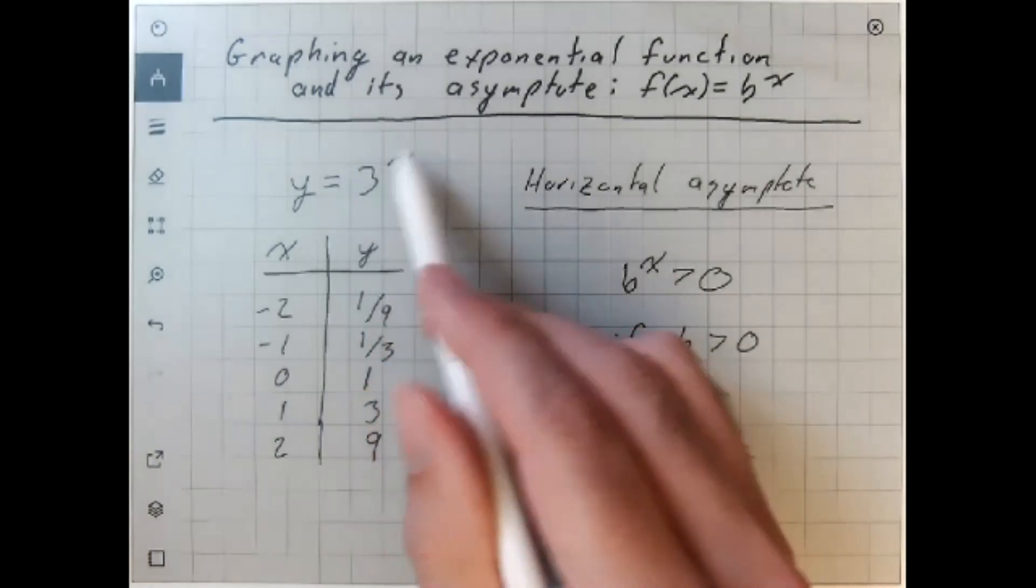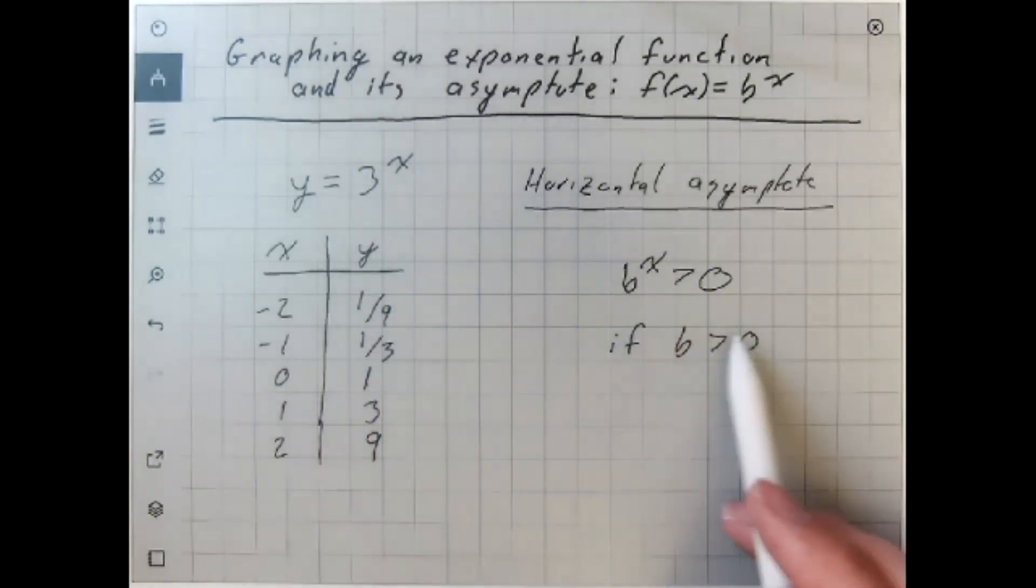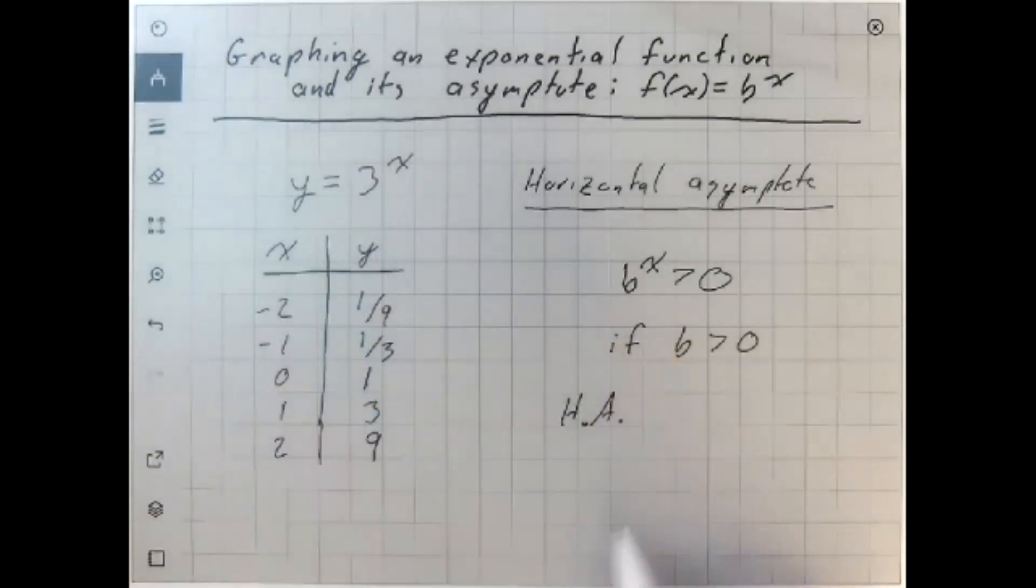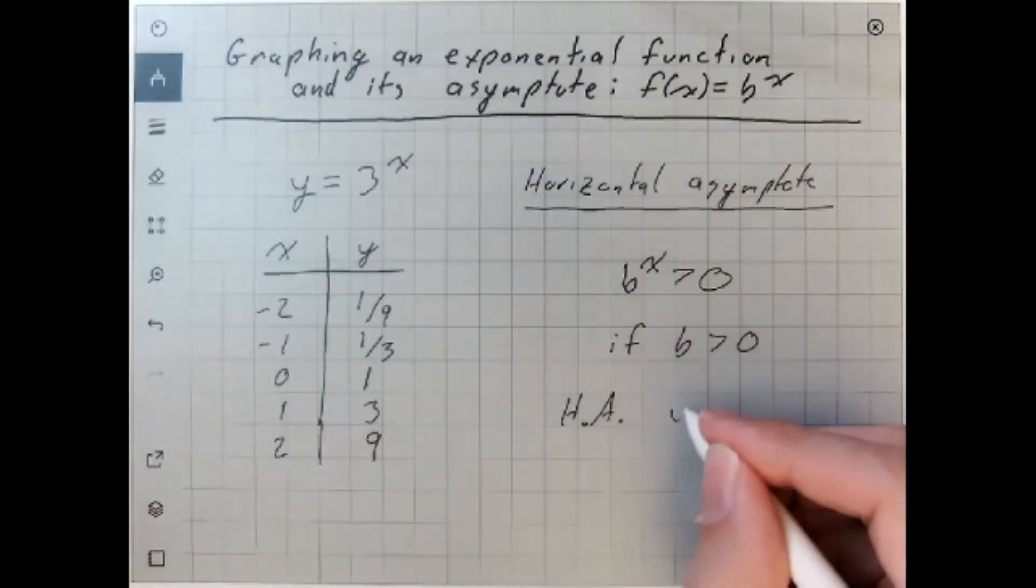So 3 to the x is going to be greater than 0 everywhere on its graph. Because of that, this graph is going to have a horizontal asymptote at y equals 0.